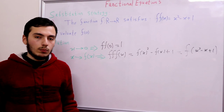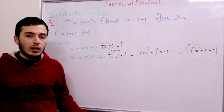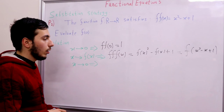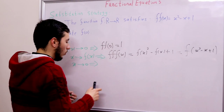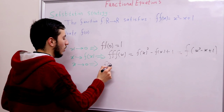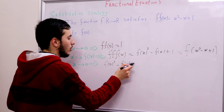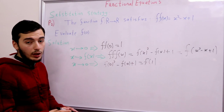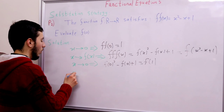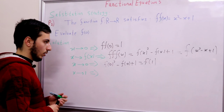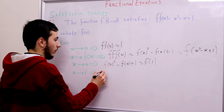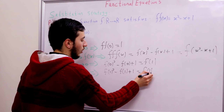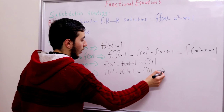So now let's try substituting with some small numbers. Since we need f(0), let's plug in x = 0. We get f(f(0)² - f(0) + 1) = f(1). So now f(0) depends on f(1). Let's evaluate f(1) by substituting x = 1. We get f(1² - f(1) + 1) ... wait, let's use the new equation: f(1) = f(1 - 1 + 1) = f(1). That means f(1) = 1.